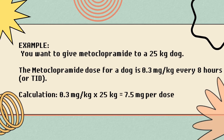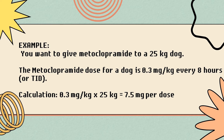Example: you want to give metoclopramide to a 25-kilogram dog. The metoclopramide dose for a dog is 0.3 milligram per kilogram every 8 hours or 3 times a day. To calculate this, we need to multiply the dose of metoclopramide by the weight of the animal: 0.3 mg/kg times 25 kg equals 7.5 milligrams per dose.